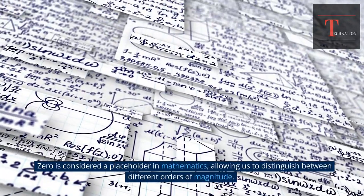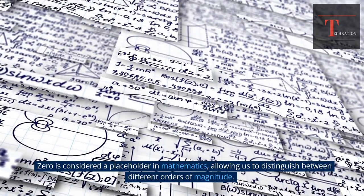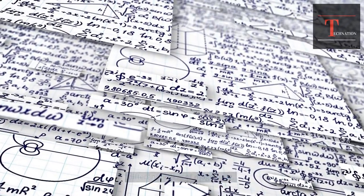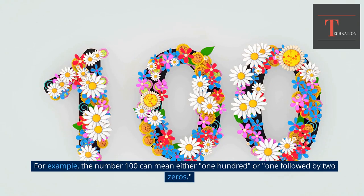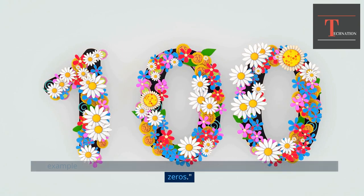Zero is considered a placeholder in mathematics, allowing us to distinguish between different orders of magnitude. For example, the number 100 can mean either 100 or 1 followed by 2 zeros.